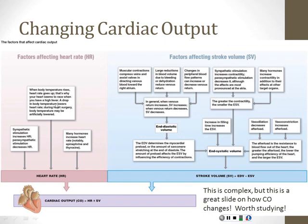In heart surgery, they'll very often chill the patient down to 80, 70, or even 60 degrees, because the colder the patient, the slower the heartbeat and the less oxygen demand there is. If you're going to stop the heart for a period of time to fix something, it's good to have the patient nice and cold so that their oxygen requirement is much, much slower.